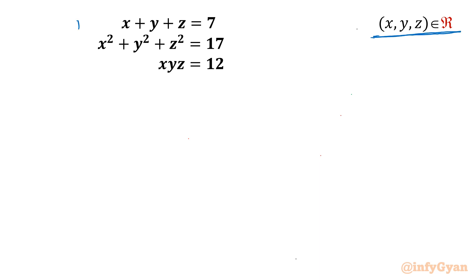So let's get started by writing equation numbers first. And then I will be writing one algebraic identity which is very powerful: x plus y plus z whole square. This whole square is x square plus y square plus z square plus 2 times xy plus yz plus zx.